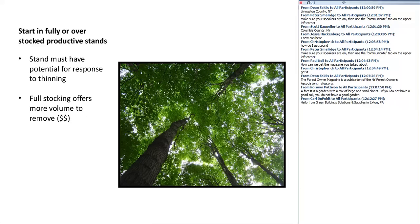So you're going to prioritize the stands, and then start in those stands that are fully or overstocked but yet are productive. You don't want a fully stocked stand that's stagnated on a poor quality soil. You want to pick a stand that has the potential to respond to thinning. Also, full stocking means you're going to have more trees to cut, and potentially a greater volume that will attract somebody to do the work for you.